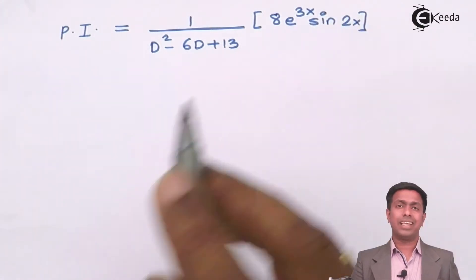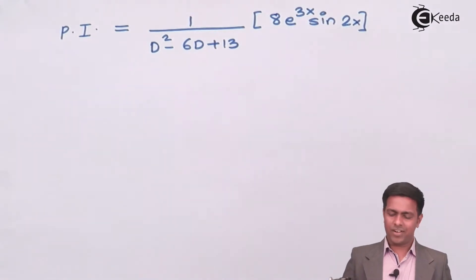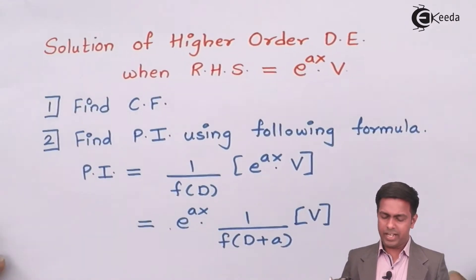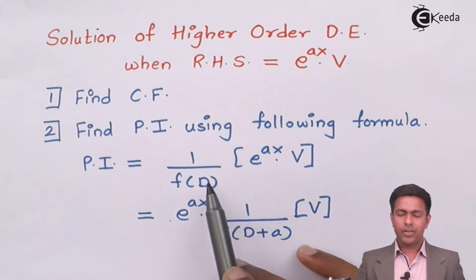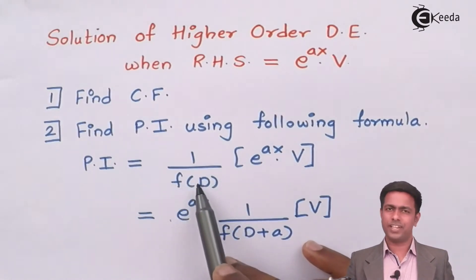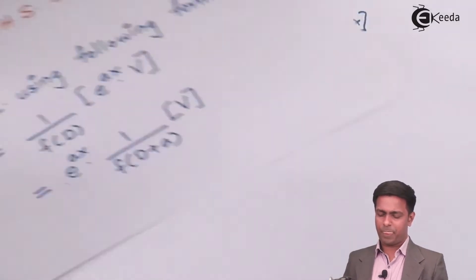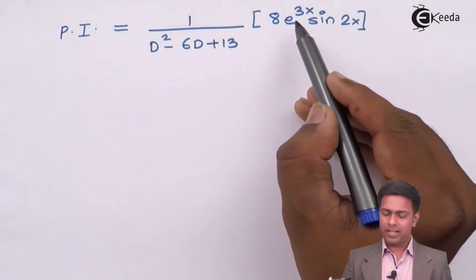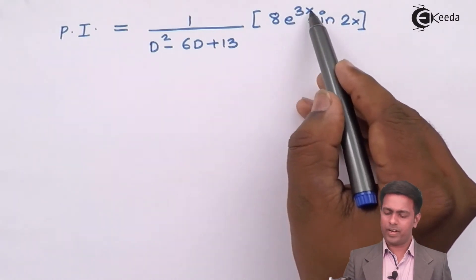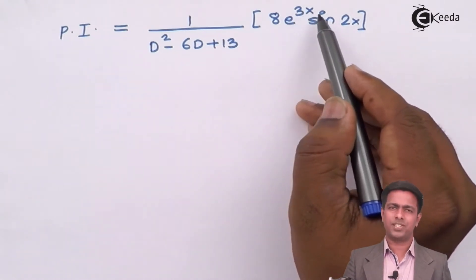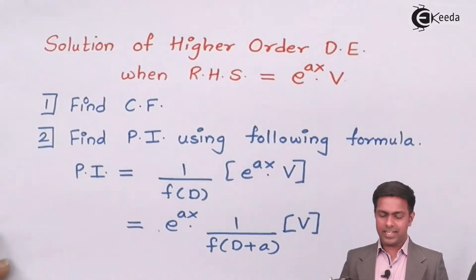Let's compare this given form with our type. We have function of D in the denominator and we have e to the power ax into v form here where the value of a is 3. E to the power ax is e to the power 3x so a becomes 3.